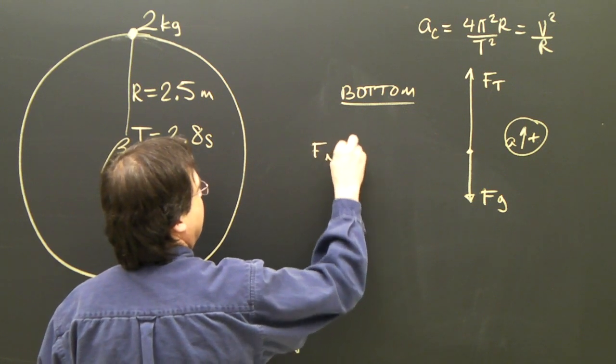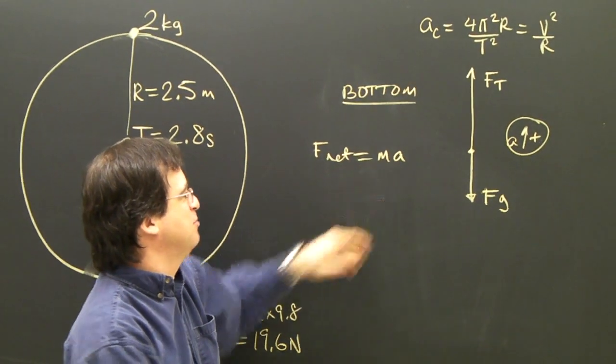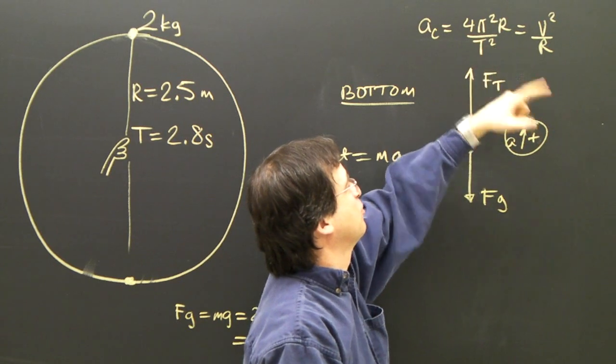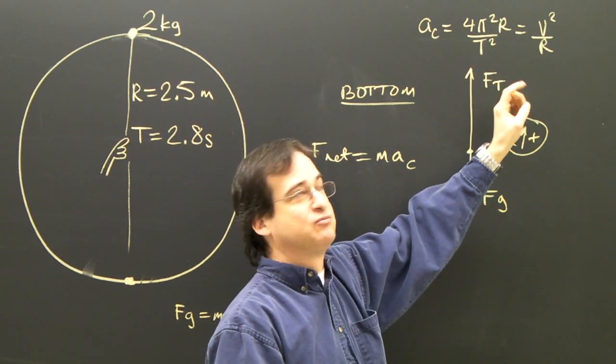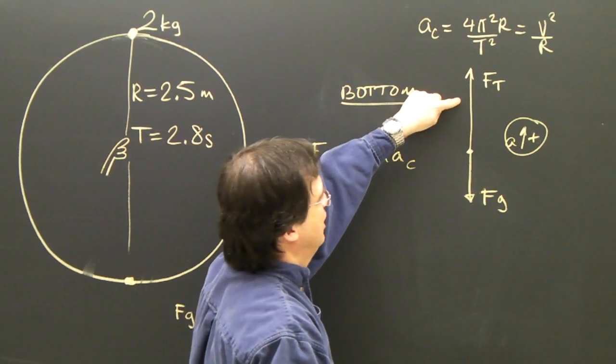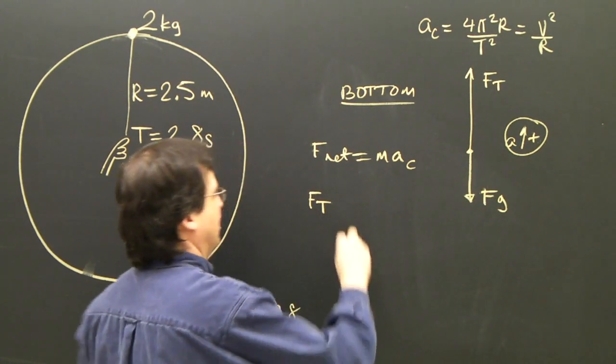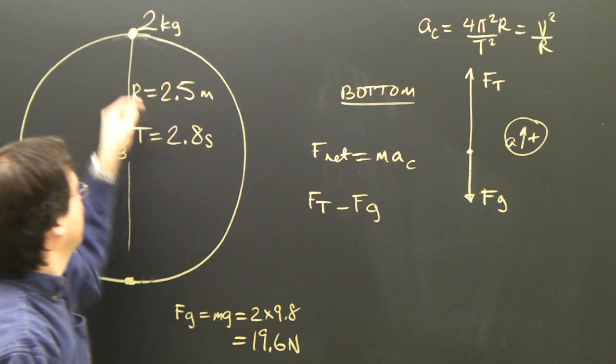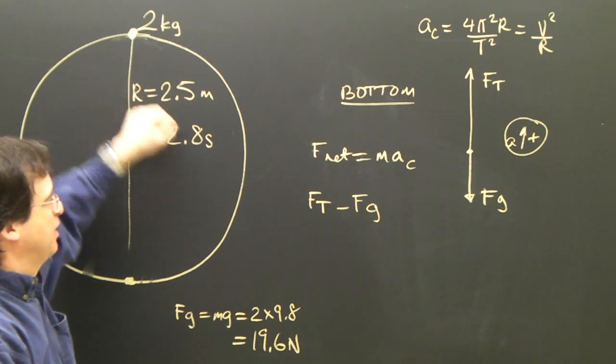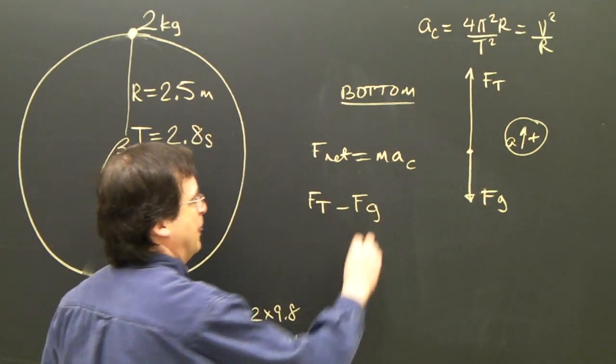Okay, so the equation that defines this, f net equals ma, but it's going in a circle. So we're not going to use ma, we're going to use mac, and we're going to replace a with one of our two formulas. We have three formulas, but I've only got two shown here. The other one, four pi squared r over T squared, is not here. So let's do this. What is the net force? Tension is positive, because it's up. So it's going to be ft. Gravity is down, so it's negative. At the top, you might remember we had ft and fg, both in the same direction, and down was positive, because it was accelerating down there. So we had ft plus fg, but in this case, ft is up, it's positive, fg is down, it's negative. And that equals m.